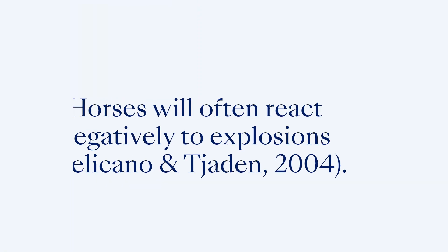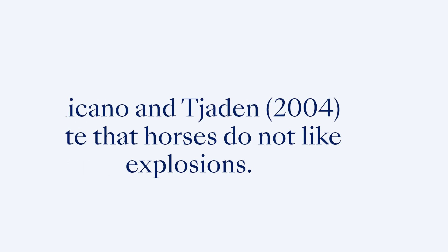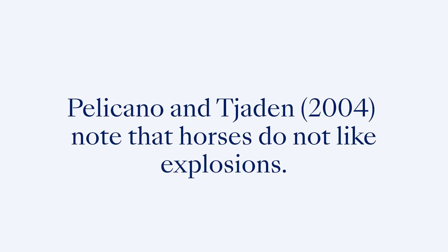What about sources with more than one author? If you're citing a source with two authors, you should include the surnames of both authors in your citation. In APA style, the authors' surnames should be separated with an ampersand symbol when it's a parenthetical citation, or the word 'and' when it's a narrative citation. For example: Horses will often react negatively to explosions. (Pelicano & Chayden, 2004). Or, Pelicano and Chayden (2004) note that horses do not like explosions.